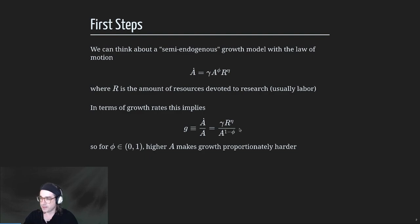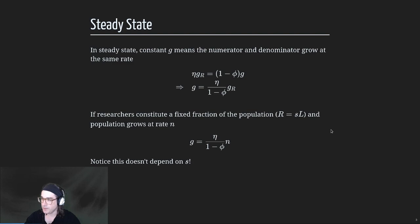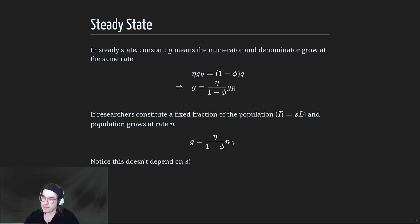When you think about it in growth rate terms, you have a balance of forces between the number of researchers you're putting in and how much more difficult new ideas are getting to produce because you've already produced old existing ideas. That balance yields a specific growth rate, wherein the numerator, which is growing at a fixed rate, is growing at the same rate as the denominator.